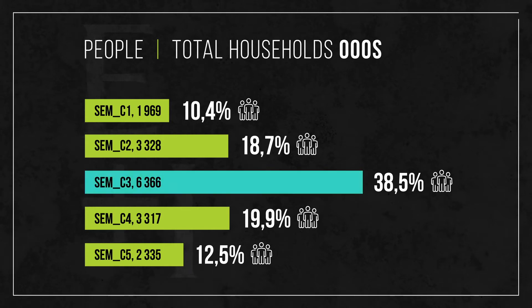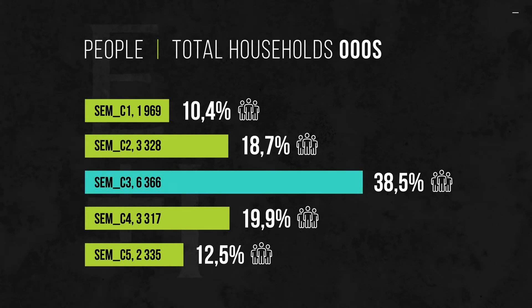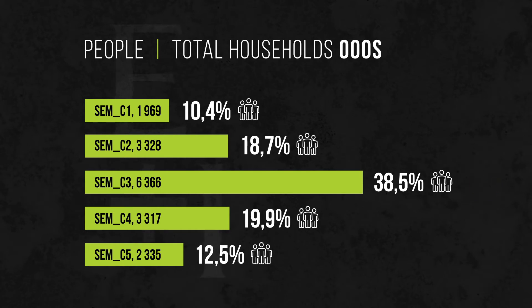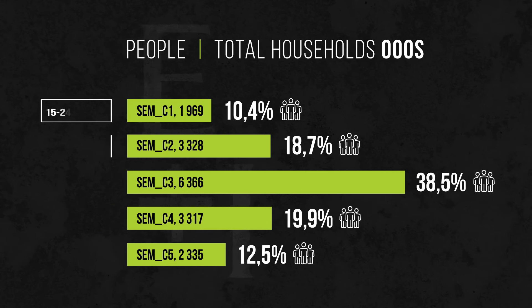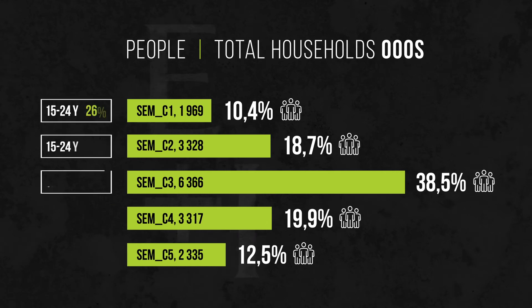SEM cluster 3 is the epicenter of the SEM model with almost 39% of adult population. But the real story is told by the transition of young people from the bottom end to the top end of the market.